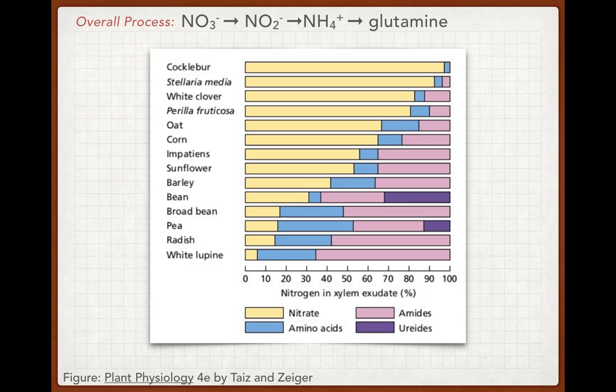Where in the plant do these things happen? It turns out it depends, to some degree, on the form of nitrogen the plant is using, and also on the species of plant. Here we have the percentage of different forms of nitrogen found in the xylem, and you'll see that it varies quite a bit with plant species.